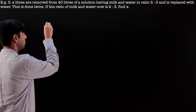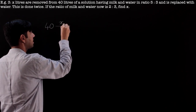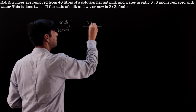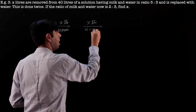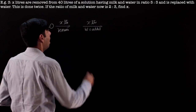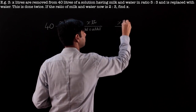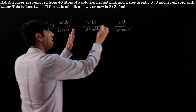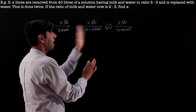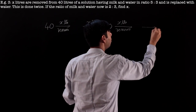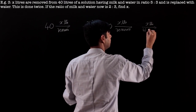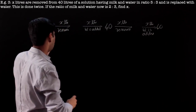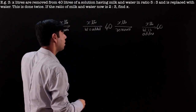At start I have 40 liters. x liters is removed, but I do not know the new volume, and then x liters of water is added. Since water is added I'll work on milk. After removing and replacing x liters, will I still get back to 40 liters? Yes — something is removed but the same amount is added, so the quantity removed equals the quantity added and we keep getting back to 40 liters.